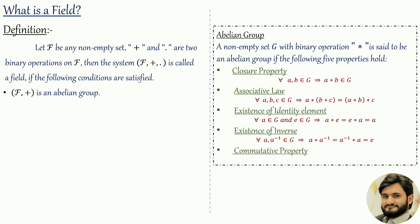The fifth property is the commutative property: for all a, b belonging to g, a * b = b * a. If any set satisfies all 5 conditions with respect to a binary operation, we call it an abelian group. So the first condition of the field is that f is an abelian group under addition.